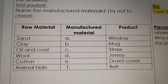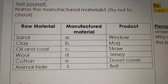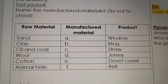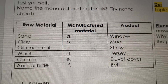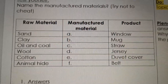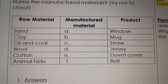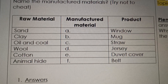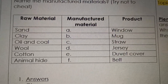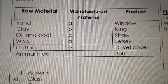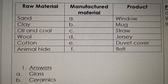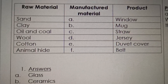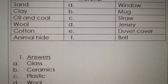Sand — sand is the raw material of which manufactured material that can make windows? Glass. Well done. Clay — you can make a manufactured material from clay, and then you can make a mug, like a mug that you can drink coffee with. The answer is ceramics. Oil and coal — straw is made out of plastic.